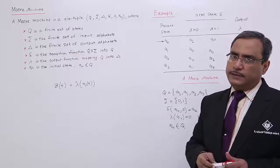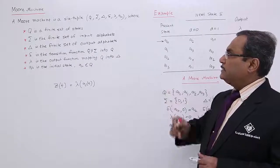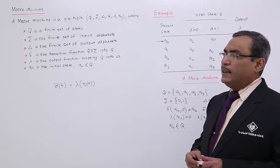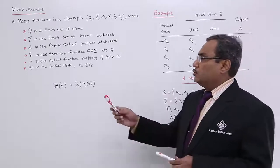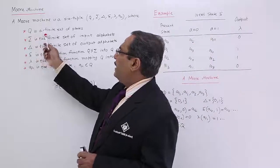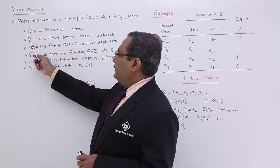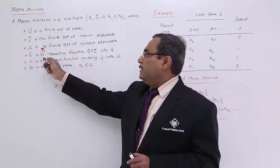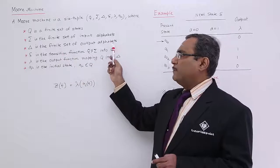Here it is six tuples: Q, sigma, delta, delta, lambda and q0. Q is a finite set of states. Sigma is a finite set of input alphabets. Delta is a finite set of output alphabets.